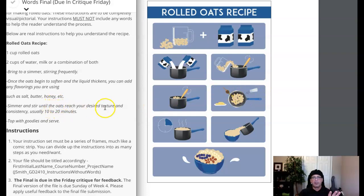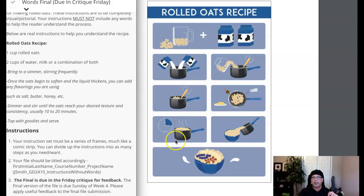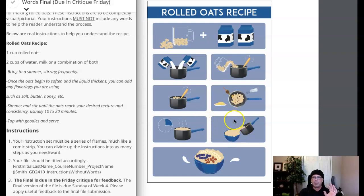At that point, we simmer and stir for 10 to 20 minutes. This is showing 15 minutes — it's not showing simmer, it's not showing stirring. This basically looks like you're just supposed to let it sit there for 15 minutes. But we need to show that it's on simmer, show the temperature, show the flame, show stirring frequently, and show 10 to 20 minutes — not 15 minutes. At that point, you can pour the ingredients. I would also introduce at this point the supplemental toppings — the goodies. Show bananas, blueberries, and strawberries over here, then we can see that they're added at the end.